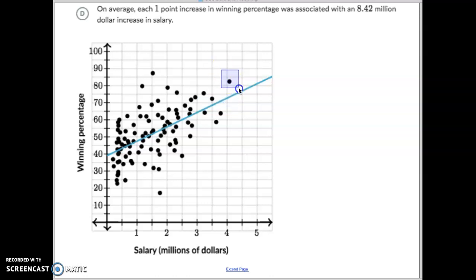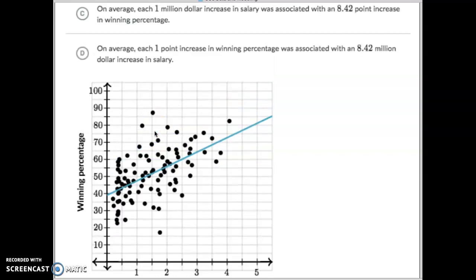This guy makes a ton of money. Makes about $4 million a year, and he wins all the time. So, obviously, there's always outliers in there. But, in general, the slope refers to every time you pay someone another million dollars, they're going to win about 8% more games for you. Okay?